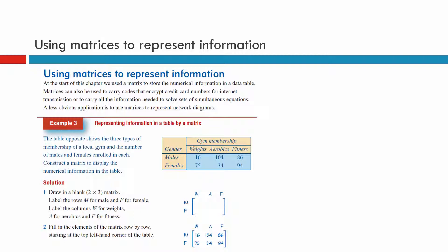So what do they actually want us to do in this one? Well, it says here on the side: construct a matrix to display the numerical information in the table. If they want us to construct the matrix, we can put W for weight. We don't have to write the whole word. A for aerobics, F for fitness, and we have M for males and F for females, and we just fill them in.